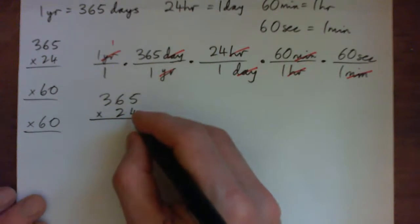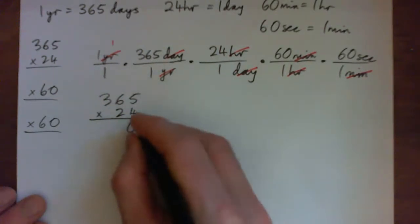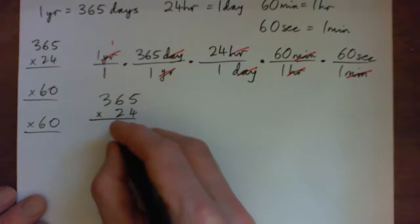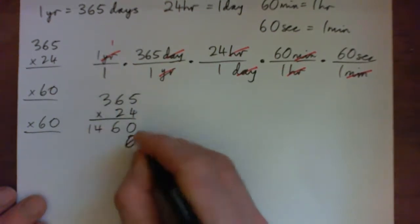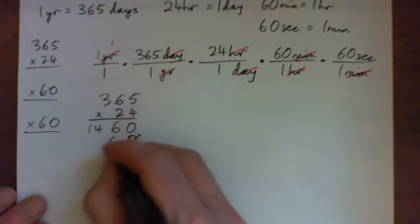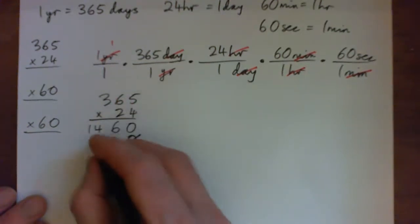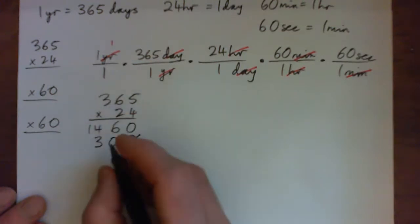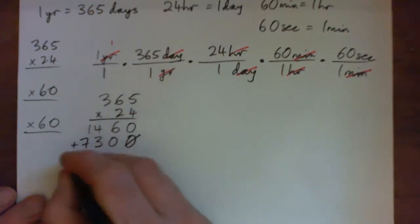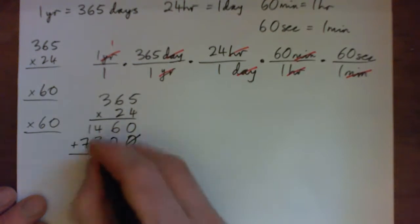4 times 5 is 20, carry 2; 4 times 6 is 24, plus 2 is 26, carry 2; 4 times 3 is 12, plus 2 is 14. Put down the 0, multiply by 2: 2 times 5 is 10, carry 1; 2 times 6 is 12, plus 1 is 13, carry 1; 2 times 3 is 6, plus 1 is 7. Adding: 0, 6, 7, 8 - that's 8,760.